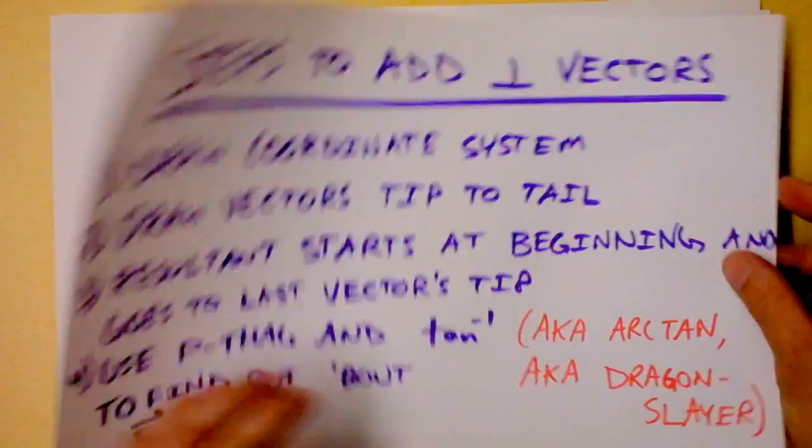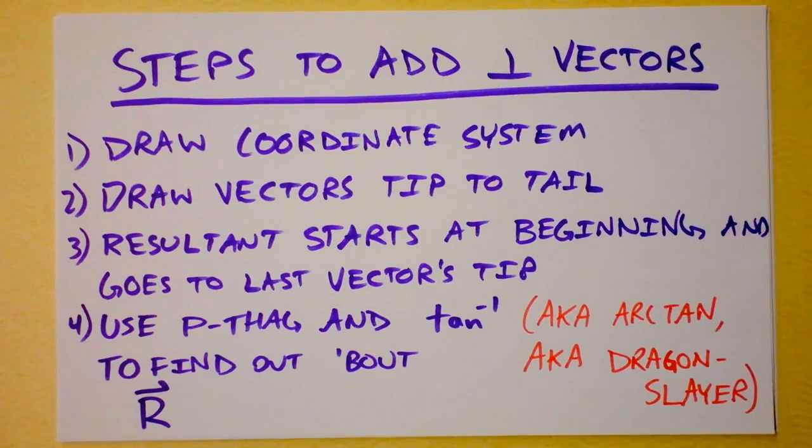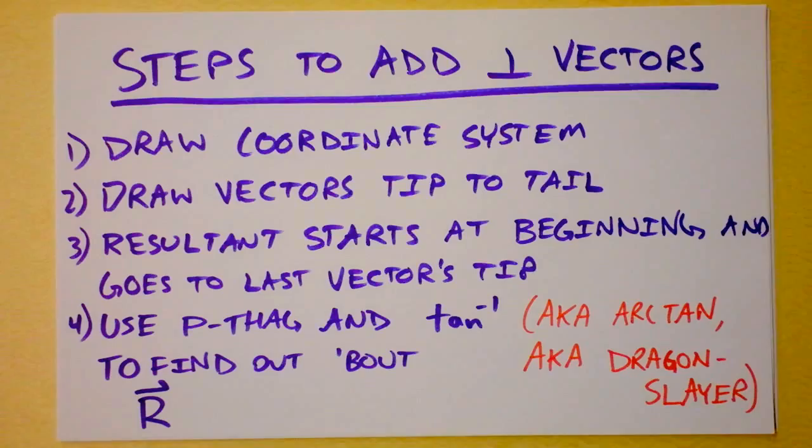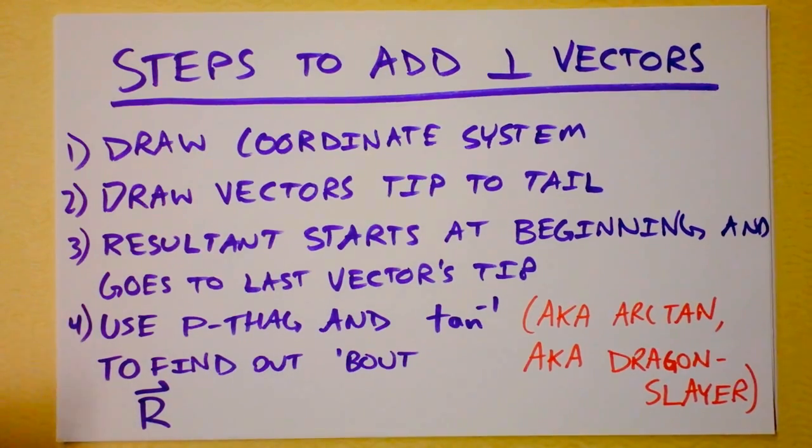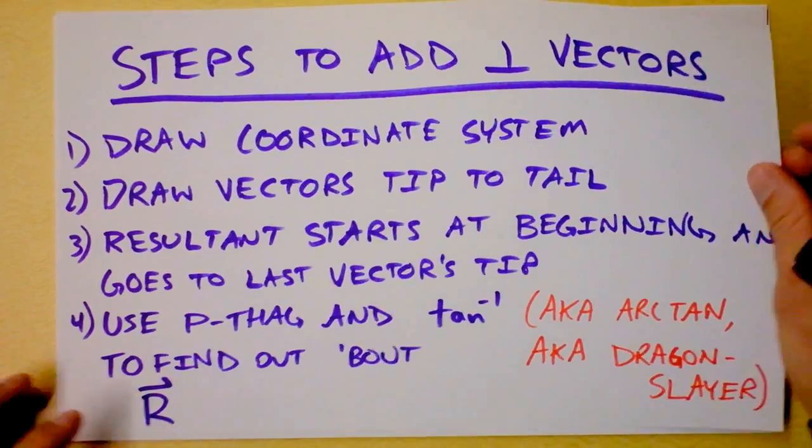To add vectors that are normal to each other, I want you to draw a coordinate system. Draw the vectors tip to tail. Then draw the resultant. And the resultant starts at the beginning and goes to the last vector's tip. It represents the sum of the vectors, so it has to do everything that those vectors do also. And then step four is to use Pythagorean theorem and inverse tangent to find out about the vector R. So I'm going to jump in and do this a bunch of times, but copy this down so that you can see what I'm doing.